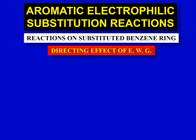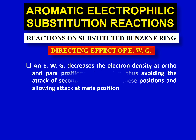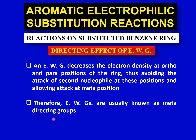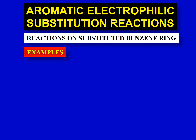Now let's see the directing effect of an electron withdrawing group. The electron withdrawing group decreases electron density at ortho and para positions. The meta positions are untouched — they are neither electron rich nor electron deficient due to the resonance effect of the electron withdrawing group. Because the ortho and para positions are relatively electron deficient, the meta position is more available for attack on the second electrophile. Therefore, electron withdrawing groups are known as meta-directing groups.